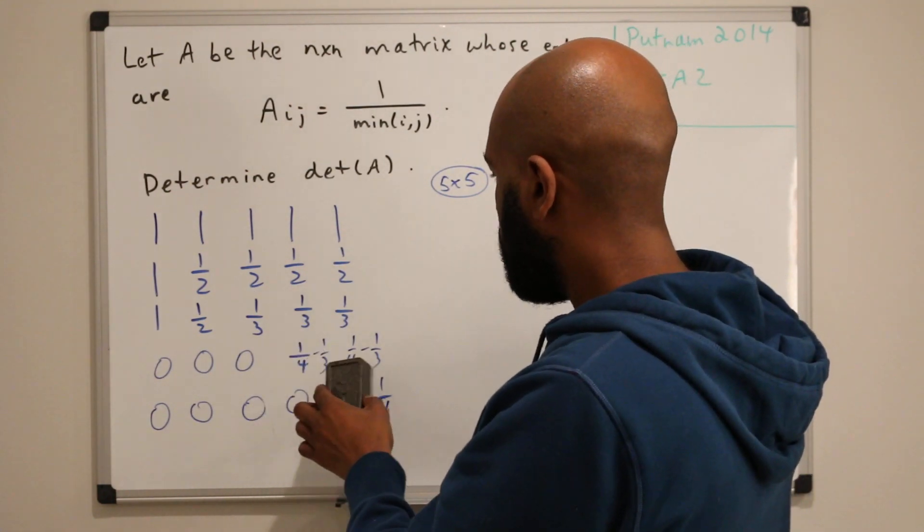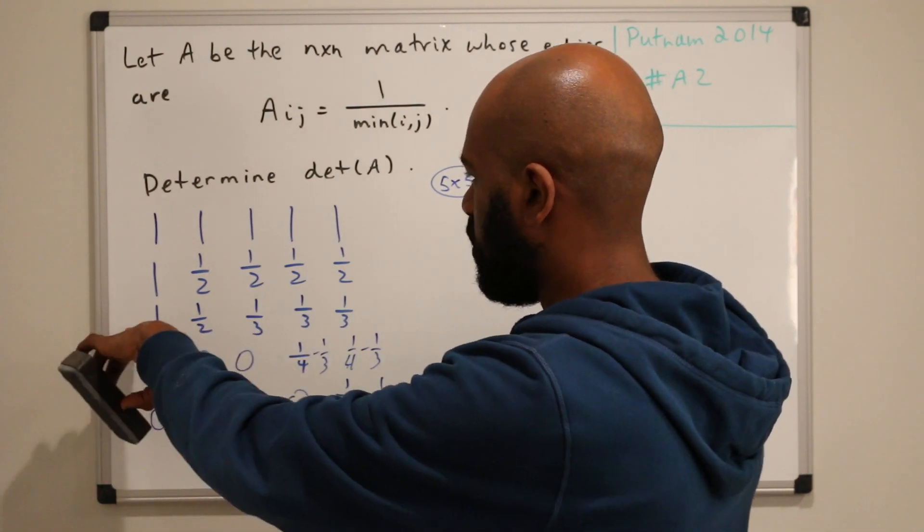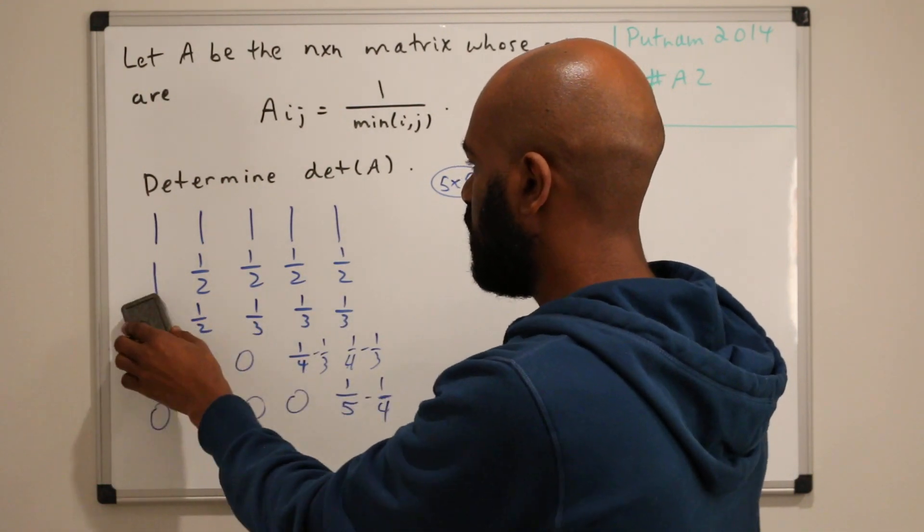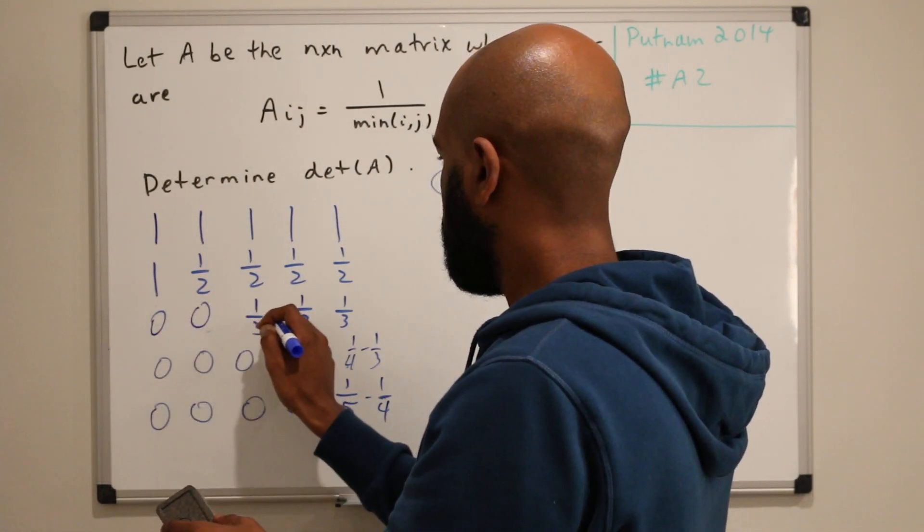So we won't need to care about what happens above the diagonal. If we do this operation again where we take this row now and subtract this row, we'll be left with two zeros here, a third minus a half.